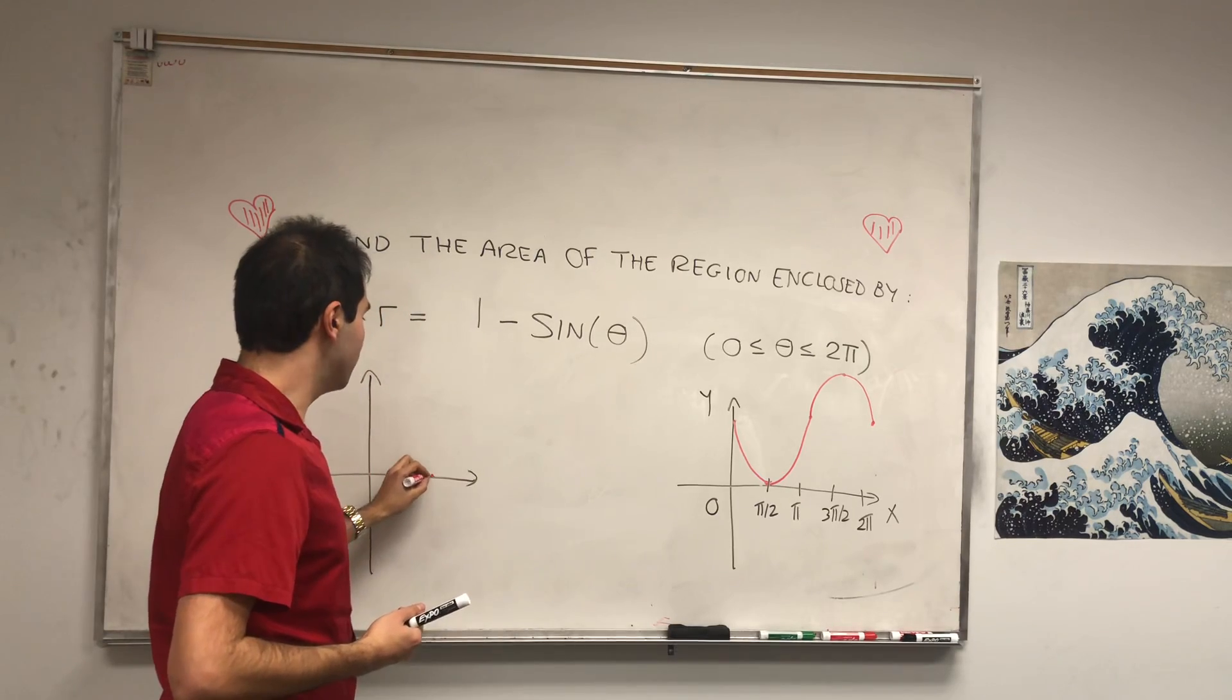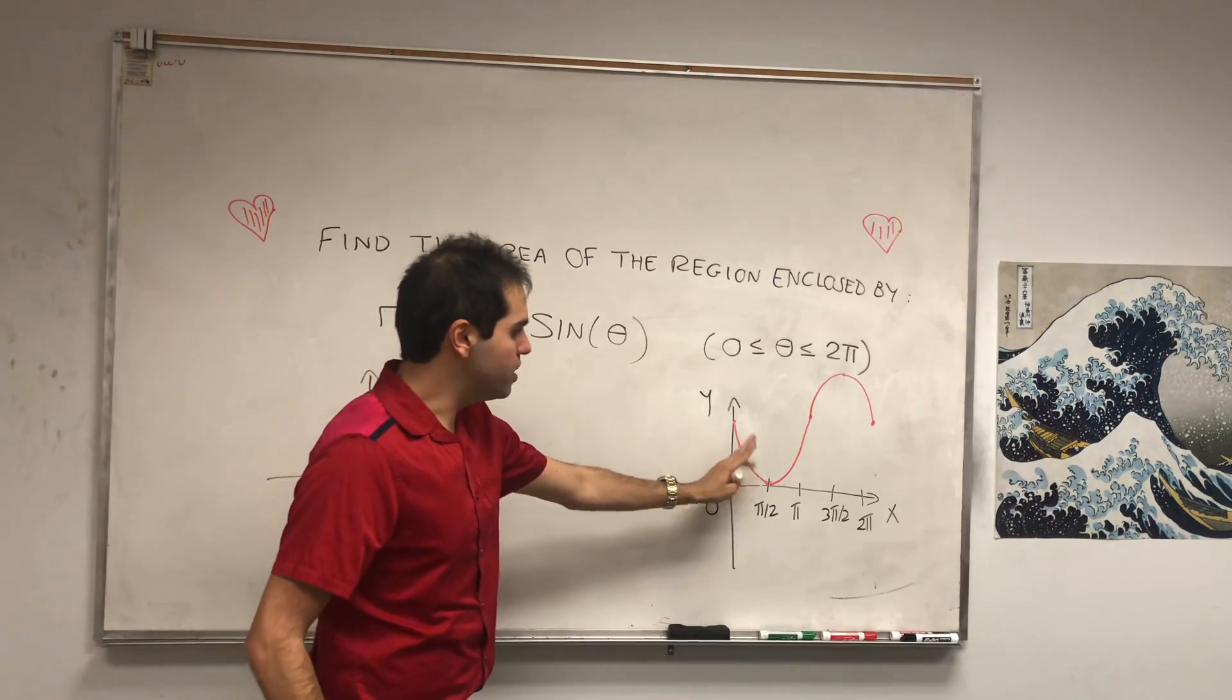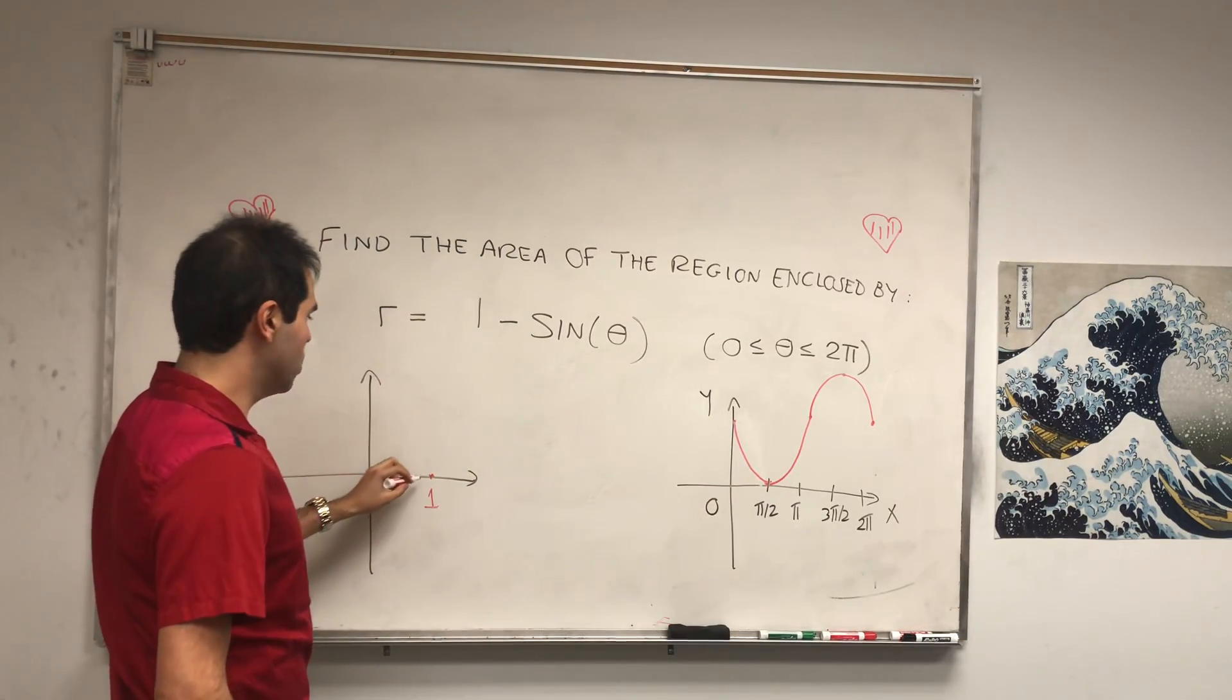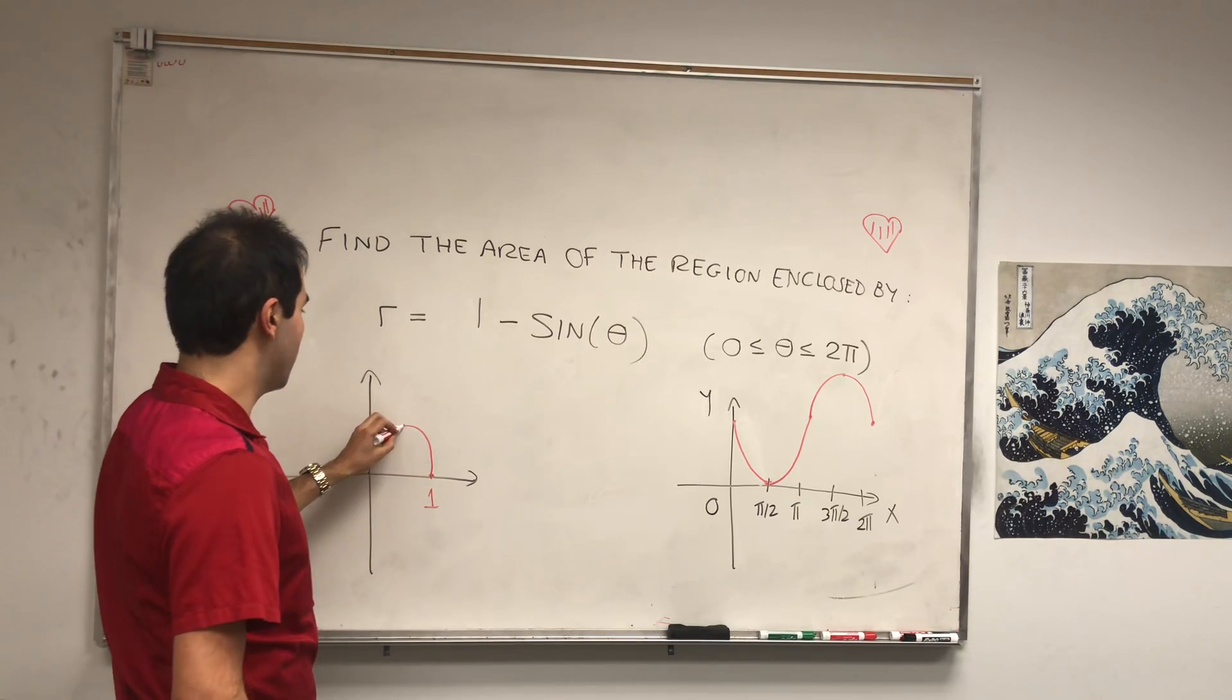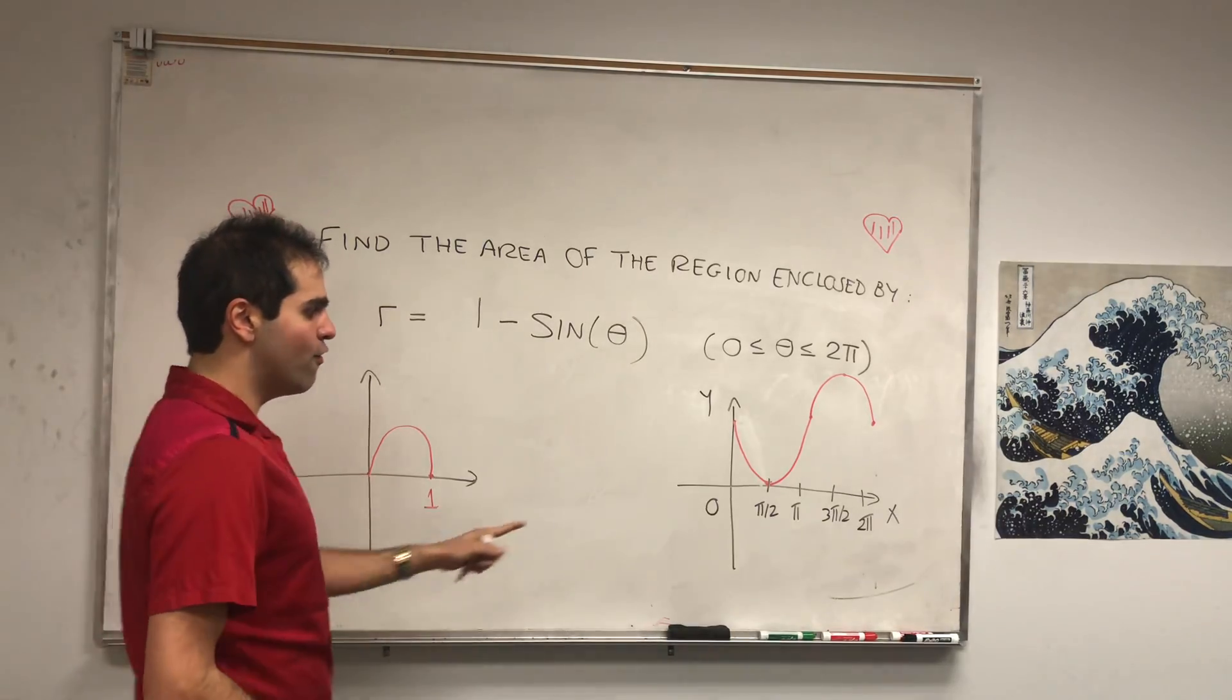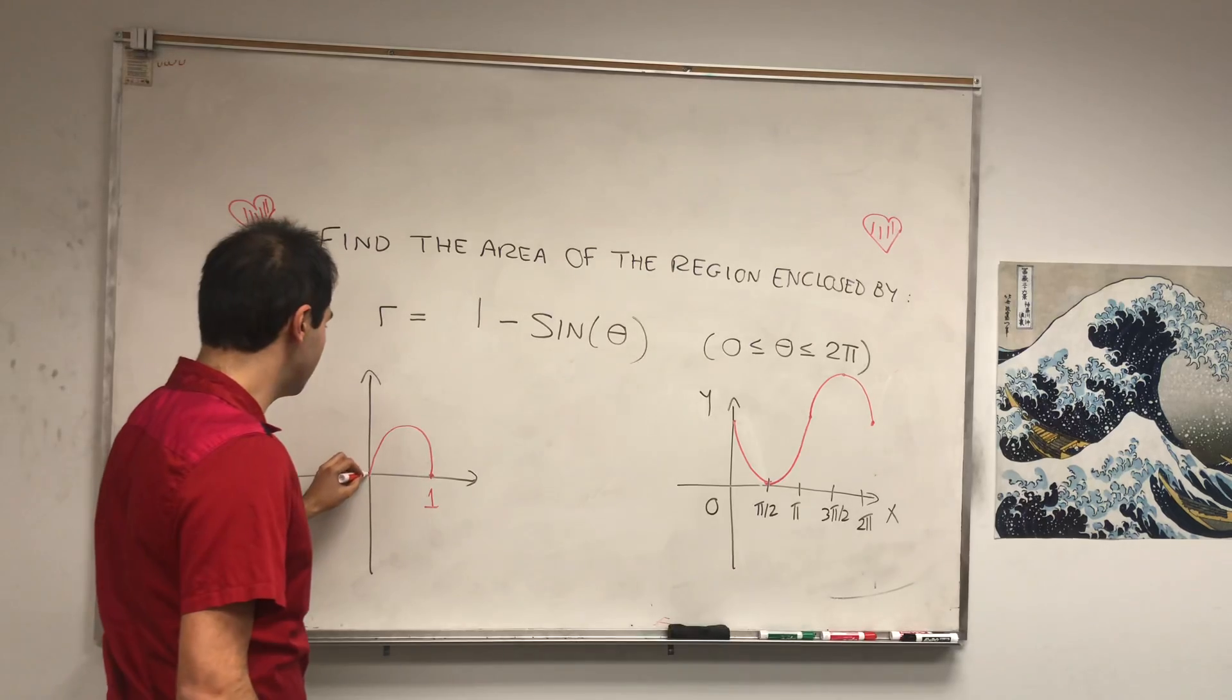At the angle of 0, it starts at 1, and then as you increase the angle to go to pi over 2, notice it just decreases. The radius decreases, and we get closer and closer to 0. And then from pi over 2 to pi, the radius increases back to 1.